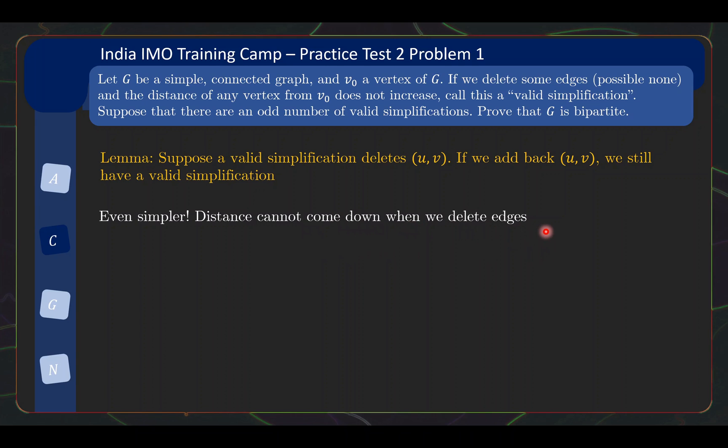Basically, distance cannot come down when we delete edges. So, if we have the distance of some vertex W in the original graph G. After we delete some edges but not UV, it can only increase but not decrease. Then, if we further delete UV, it can possibly increase but not decrease. And by the definition of valid simplification, this part here is of the same as the original distance. So, for your valid simplification before deleting UV, you will still get a valid simplification. The notation here is a bit sloppy but I think you get what I'm trying to say.